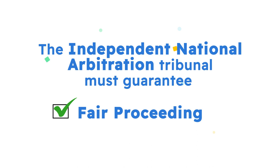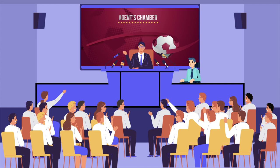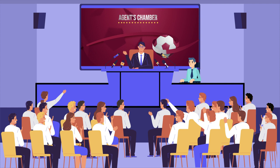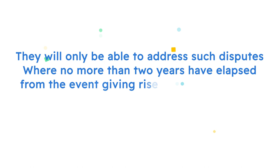Finally, the Agents Chamber is also composed of a chairperson and a deputy chairperson and the necessary number of members as decided by the FIFA Council. The Agents Chamber has jurisdiction under the FIFA Football Agent Regulations, article 20, over disputes arising out of or in connection with the representation agreement with an international dimension, or where a claim is lodged in accordance with the procedural rules governing the Football Tribunal. They will only be able to address such disputes where no more than two years have elapsed from the event giving rise to the dispute. The application of this time limit shall be examined ex officio in each case.